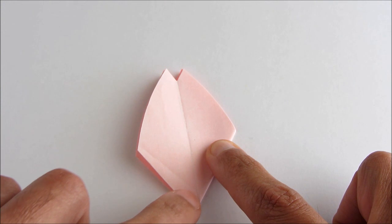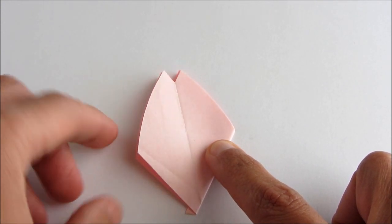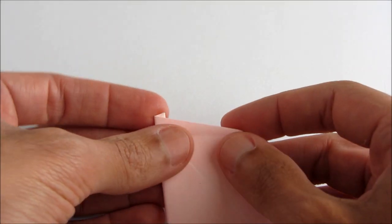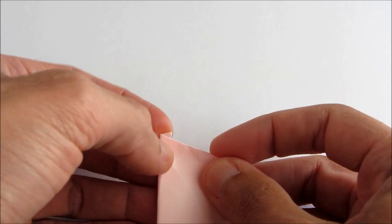Then on the other edge we're going to make a valley fold about the same width and again parallel to the edge. Just fold the whole edge over like this.